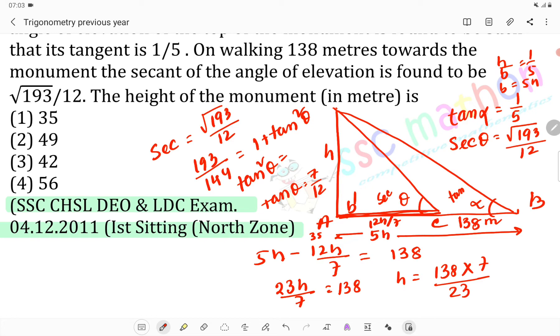H equals 138 into 7 upon 23. So h equals 42 meters, the height of the monument. Option 3.